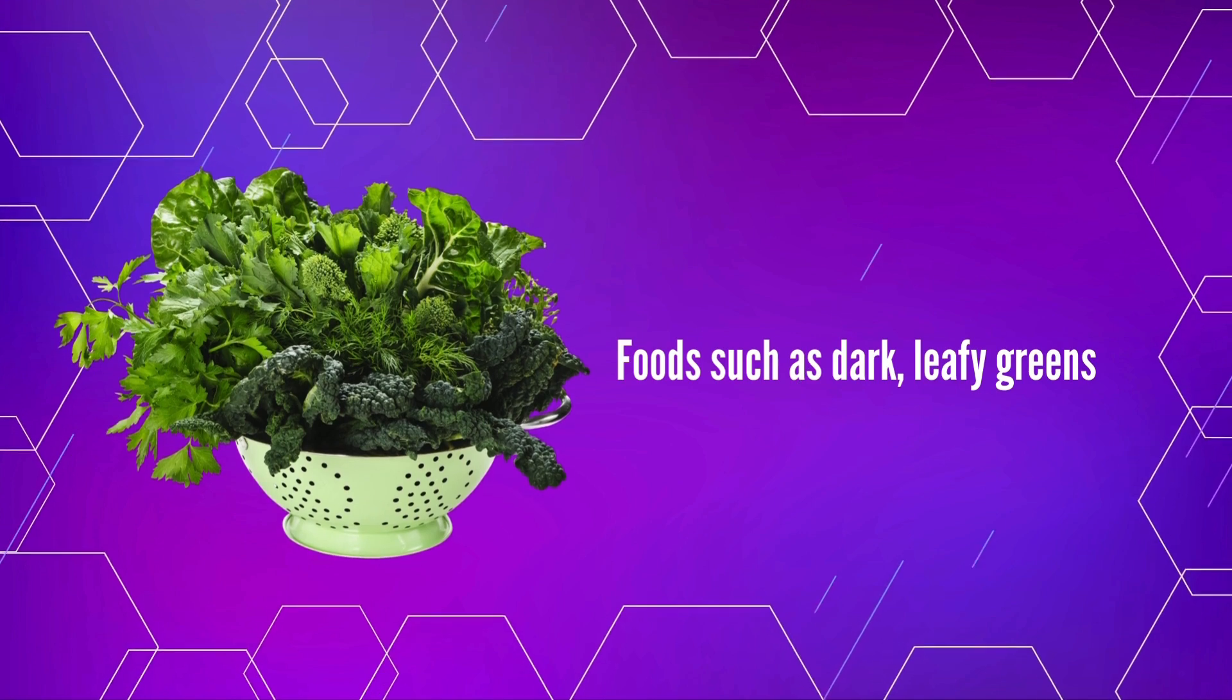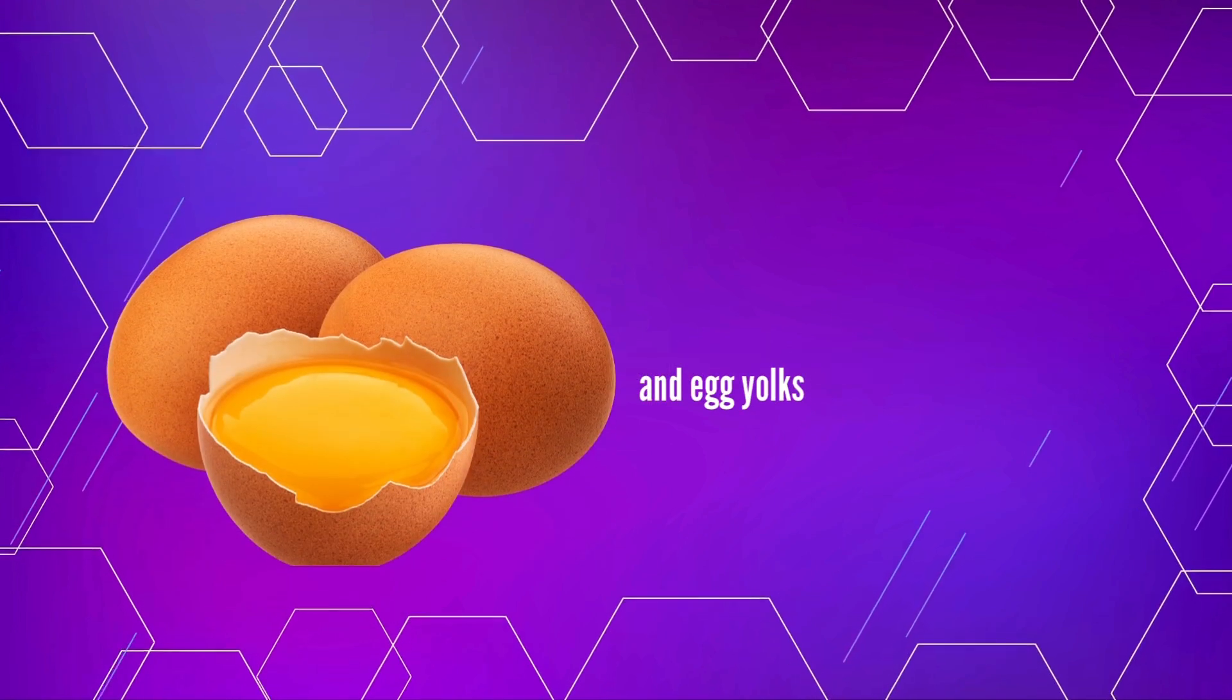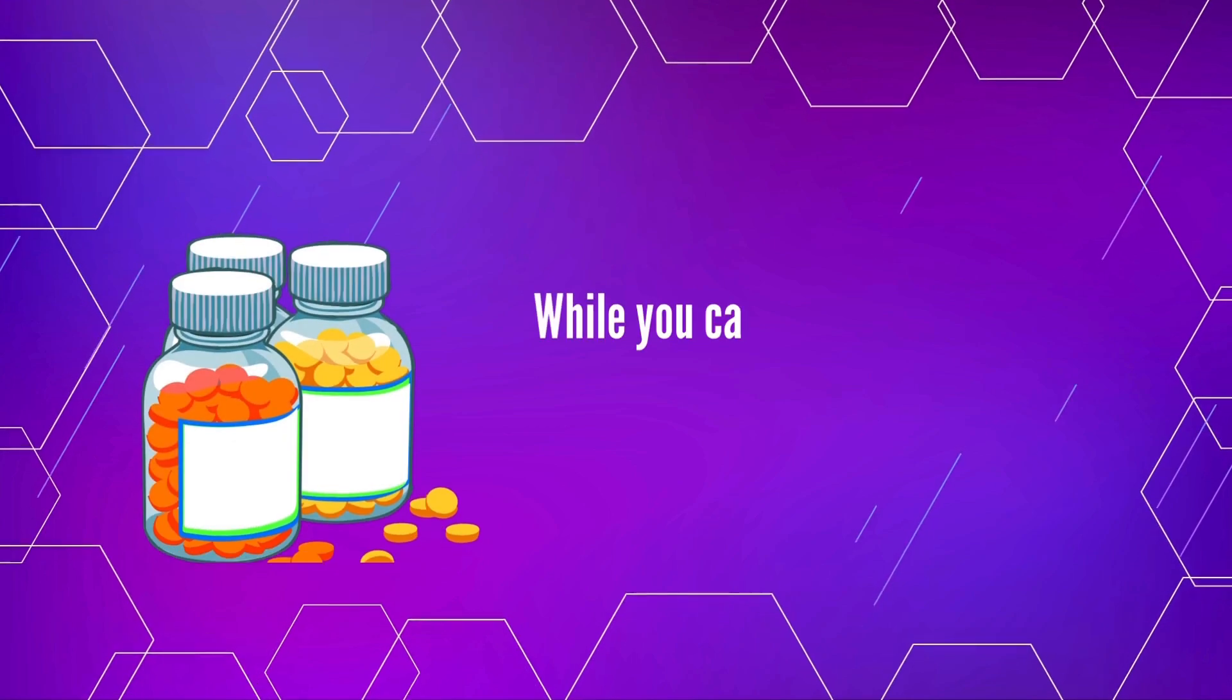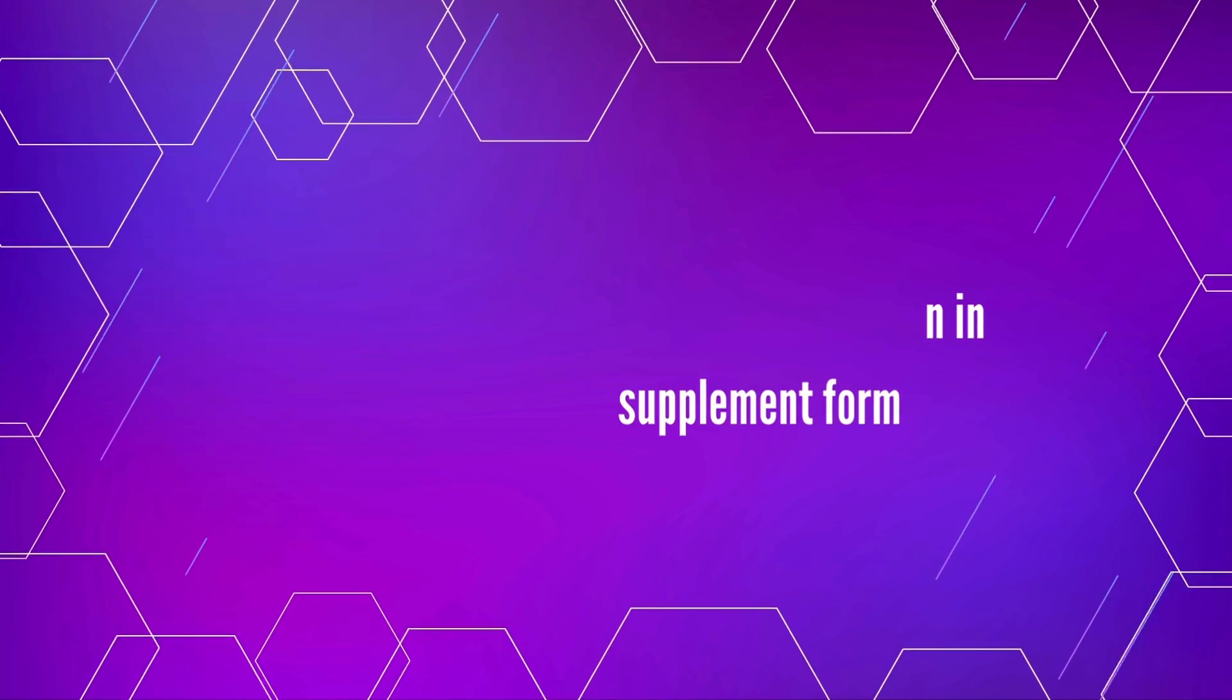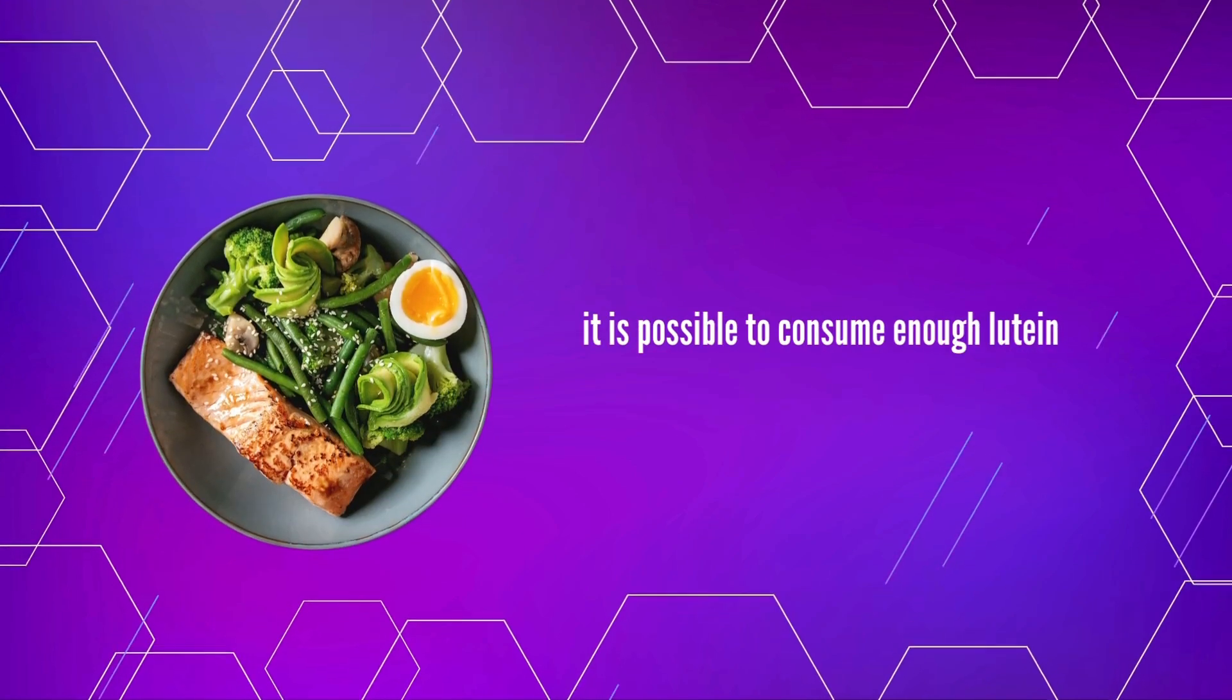Foods such as dark, leafy greens, and egg yolks are great sources of lutein. While you can find lutein in supplement form, it is possible to consume enough lutein through diet alone.